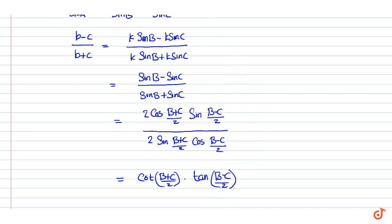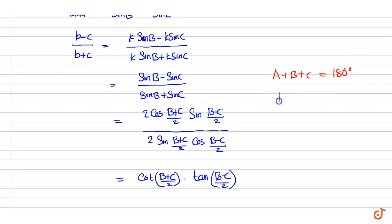Now, in a triangle, A plus B plus C equals 180 degrees. Therefore, (B plus C) by 2 equals 90 minus A by 2.